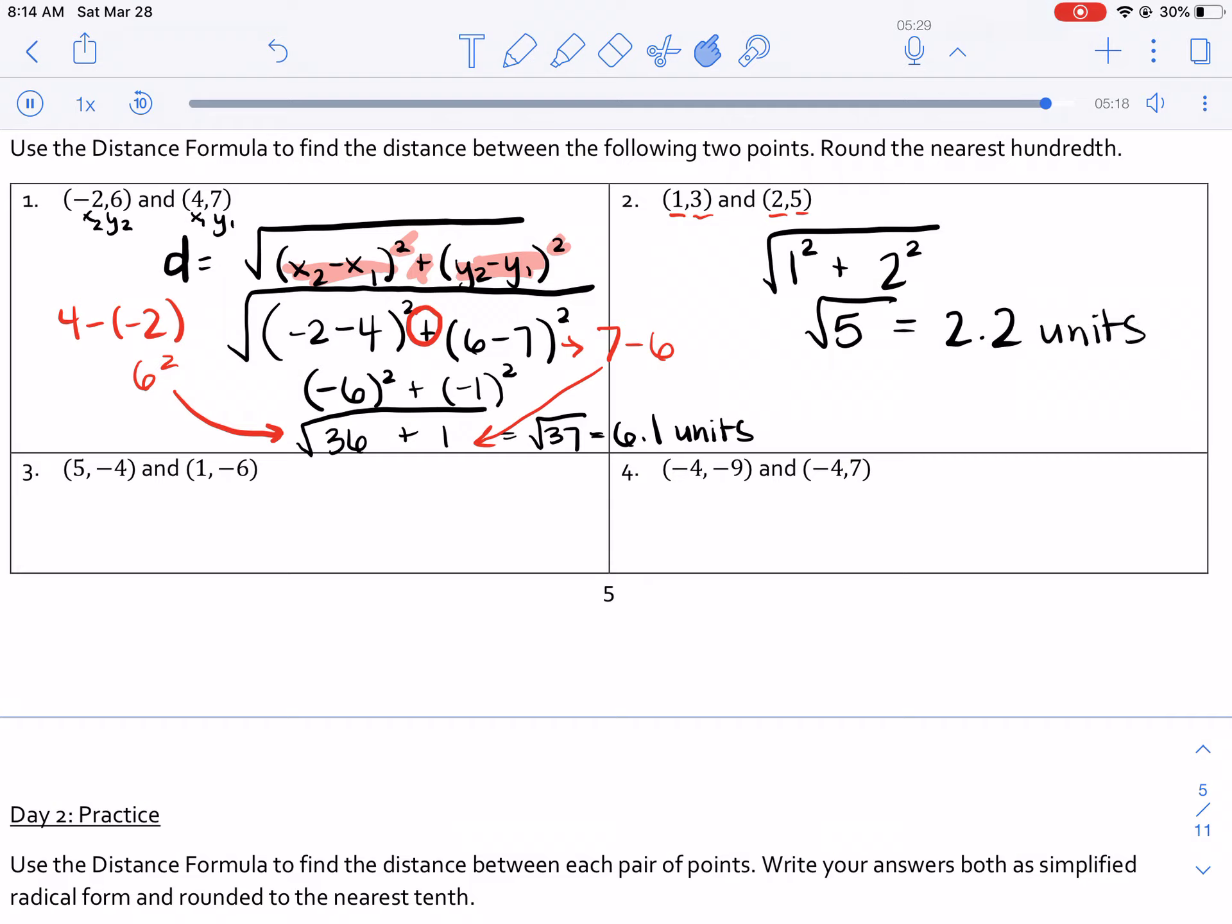So if you noticed, that second time was really easy. All I had to do was find the difference between the numbers and then square them, add them together, take the square root. Thanks guys, good luck.